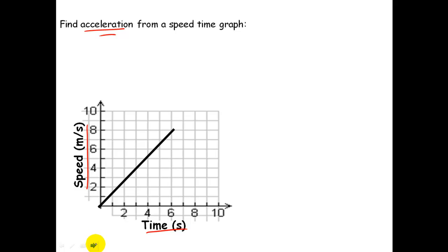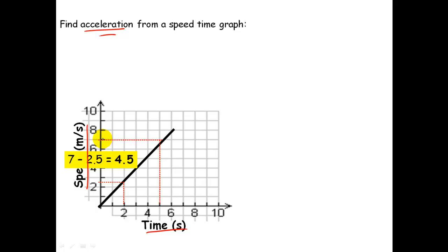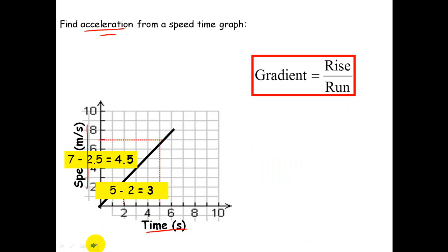To measure the gradient, just like you did with the distance-time graph, draw two lines out — you can put them anywhere you like. It's better to make them widely spaced because you'll get a more accurate answer. Then measure the size: from 7 and 2.5, so 7 minus 2.5 gives us 4.5 metres per second — that's the change in speed. The time is from 5 and 2, so the change in time is 3. Write the formula: gradient equals rise divided by run.